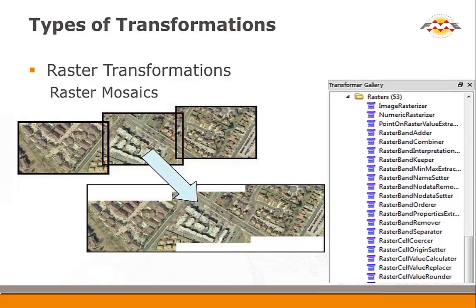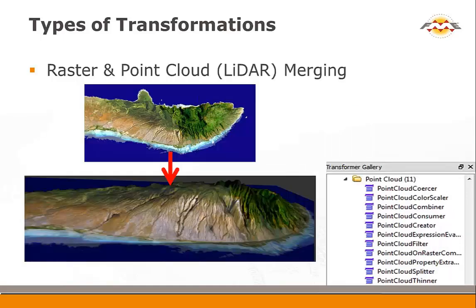There's a wide variety of geometry transformation tools oriented toward traditional CAD, GIS, and database users doing data model restructuring. We also have tools for raster data in a transformer gallery that helps you restructure raster data — for example, taking tiles and mosaicing them together. There's also a tiler tool that takes a mosaic and tiles it out into a regular pattern of imagery.